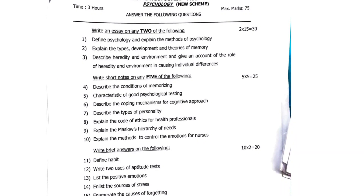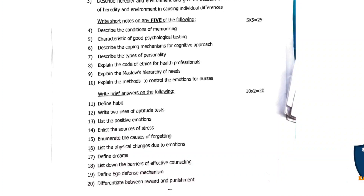Next is short notes: describe the conditions of memorizing. Fifth question: characteristics of good psychological testing. Sixth question: describe the coping mechanism for cognitive approach. Seventh question: describe the types of personality. Eighth question: explain the code of ethics for health professionals. Ninth question: explain Maslow's hierarchy of needs. Tenth question: explain the methods to control emotions for nurses. Moving on to brief answers: define habit, write two uses of aptitude tests. List the positive emotions. Enlist the sources of stress. Enumerate the causes of forgetting. List the physical changes due to emotions. Define dreams. List down the barriers of effective counseling. Define ego defense mechanism. Differentiate between reward and punishment.